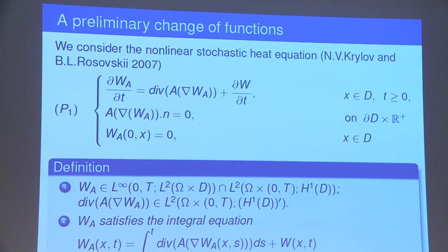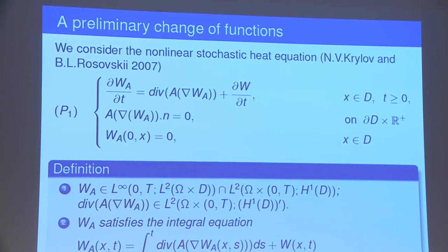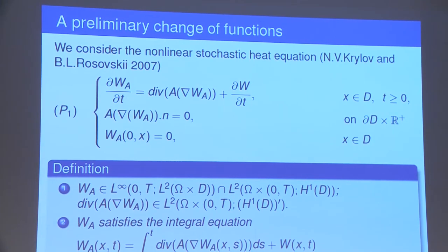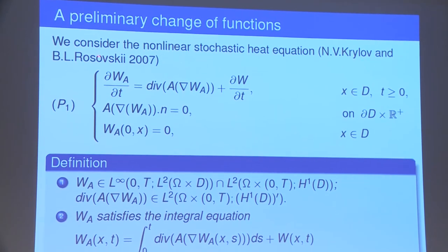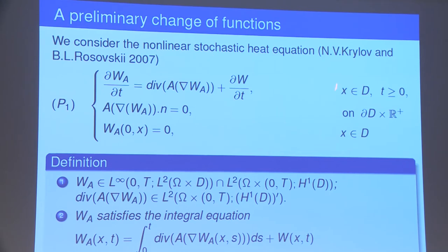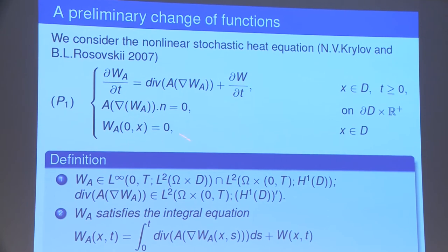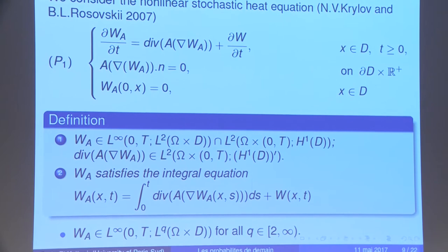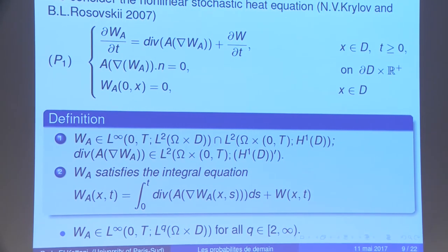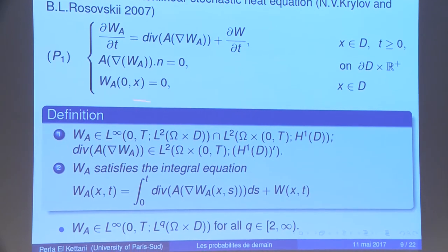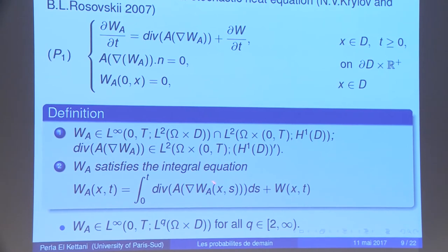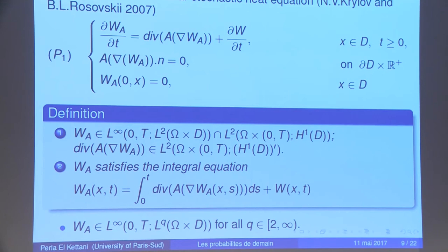To start the proof of existence, we introduce an auxiliary problem P1: the stochastic heat equation with nonlinear diffusion term. Specifically, partial derivative of W_A over partial derivative of t equals divergence of A of gradient of W_A plus the stochastic term, with boundary conditions and initial condition equal to 0. The well-posedness of this problem was studied by Krylov and Rozovsky in 2007. W_A satisfies the integral equation: W_A equals the integral from 0 to t of divergence of A of gradient of W_A plus W(x,t).